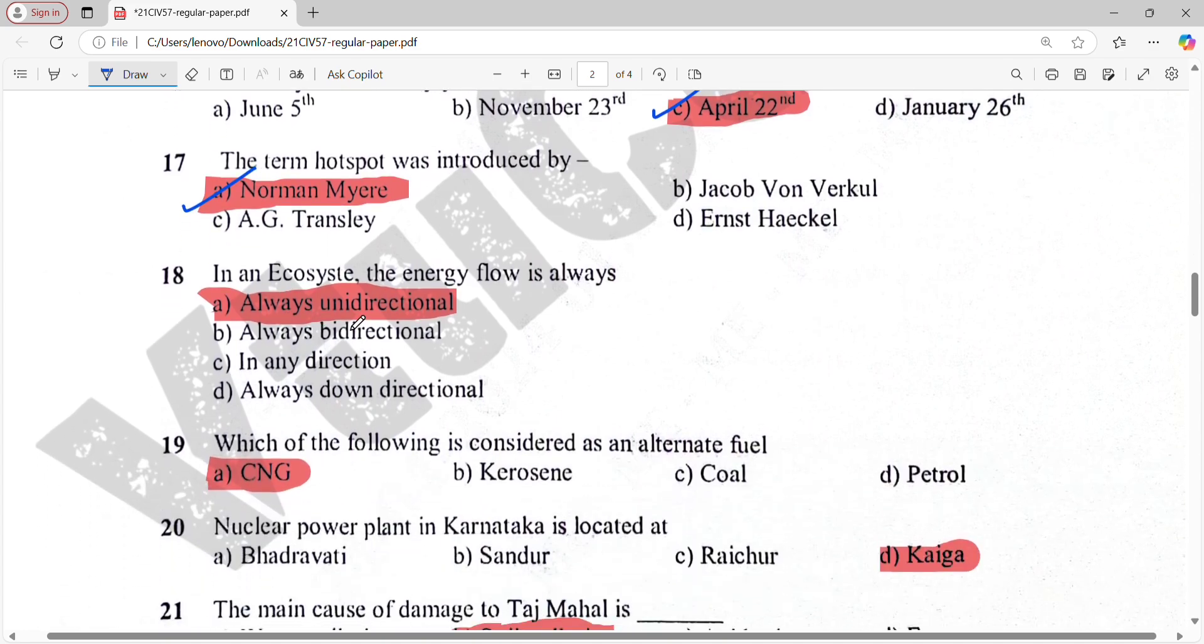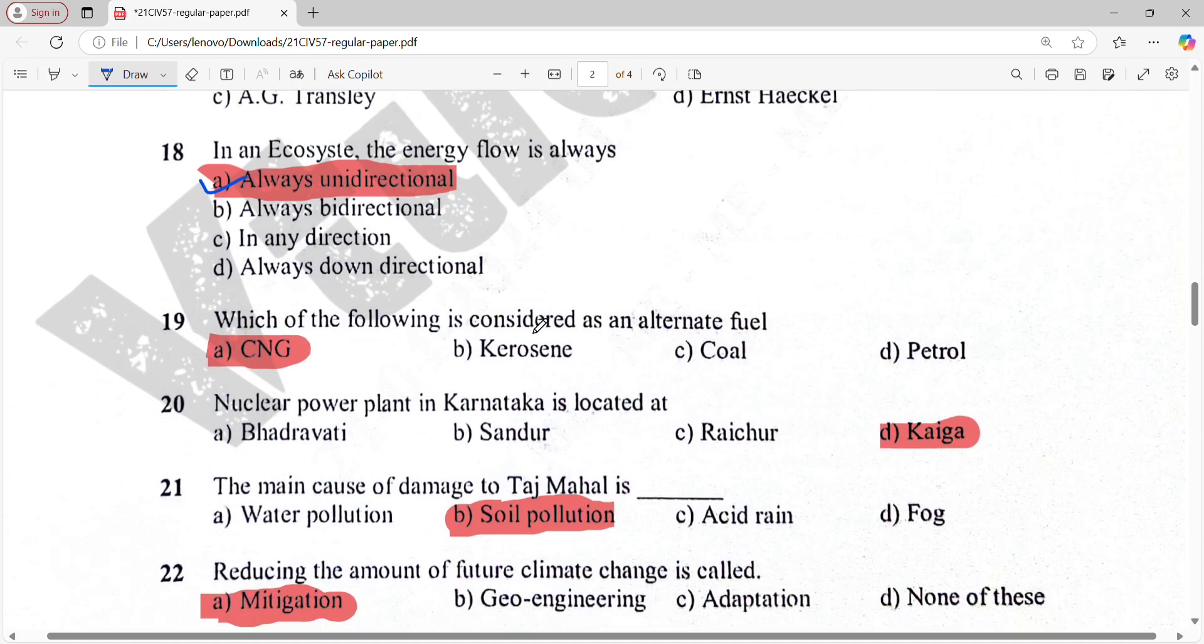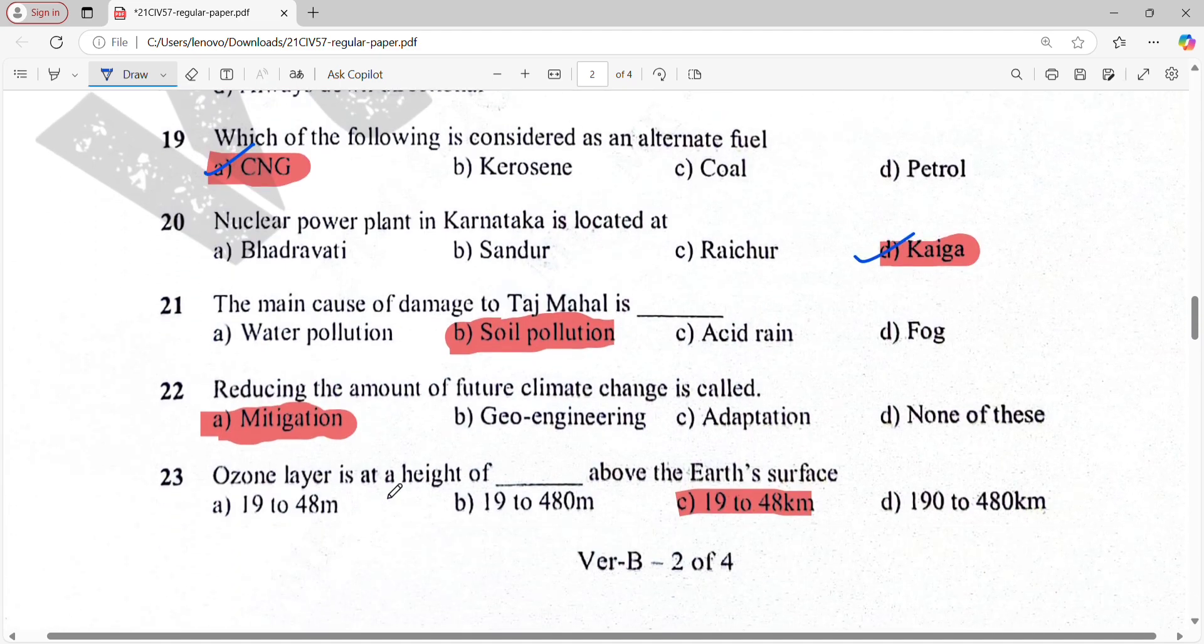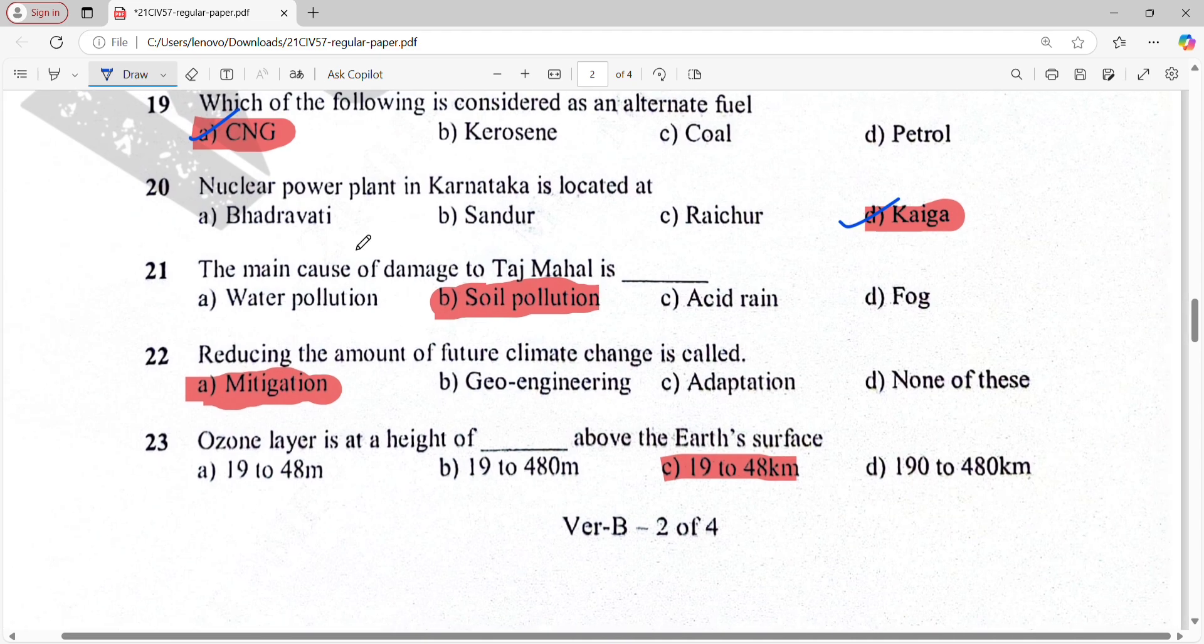In an ecosystem, the energy flow is always unidirectional. Which of the following is considered as an alternate fuel? That is CNG. Nuclear power plant in Karnataka is located in Kaiga.